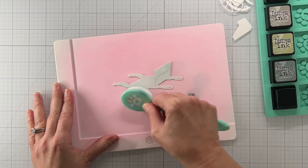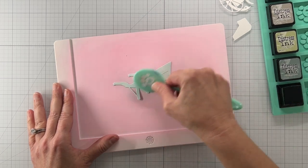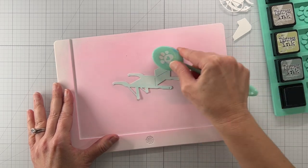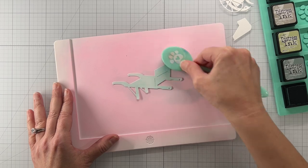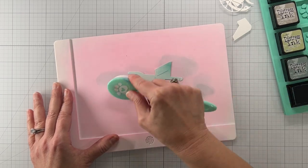We're going to start off by cutting all of the dies out of white cardstock. It's easy to just color your own die cuts instead of having to cut them all out of different colors of cardstock.